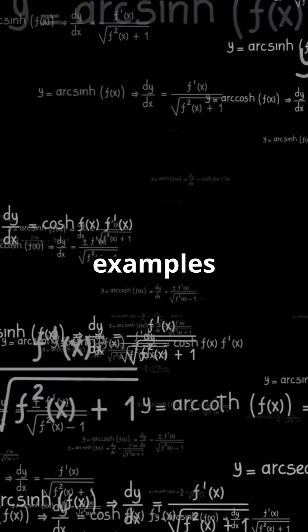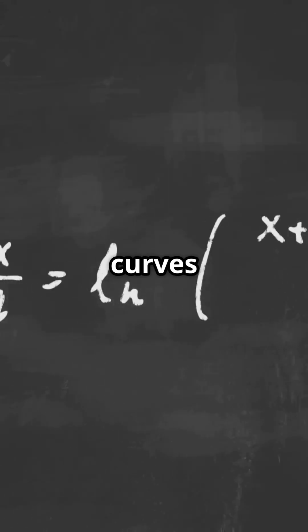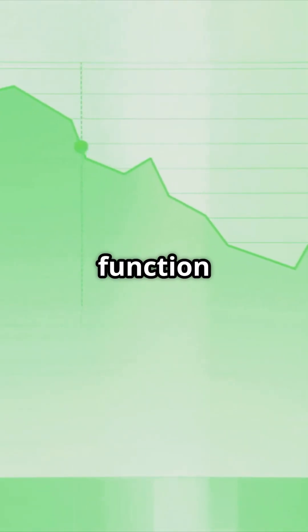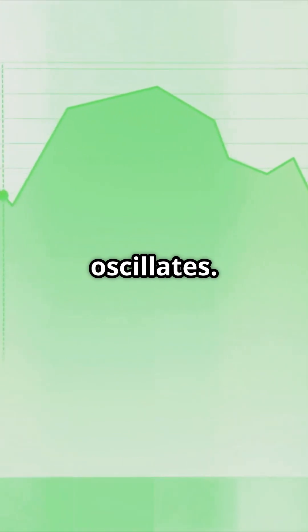Here are three quick examples. First, function curves. For example, y equals sine of x, y equals e to the x, and so on. The graph shows where the function rises, falls, and oscillates.